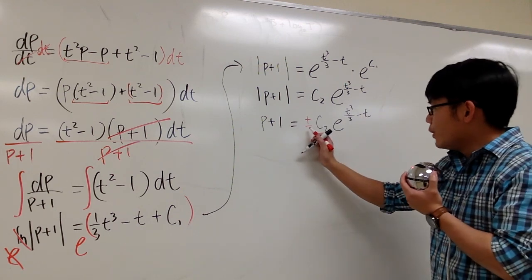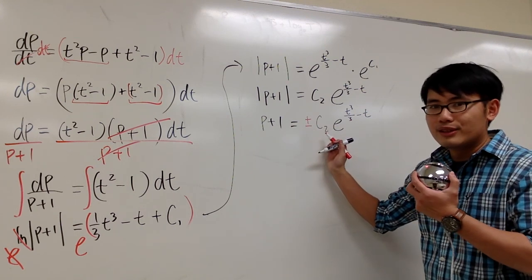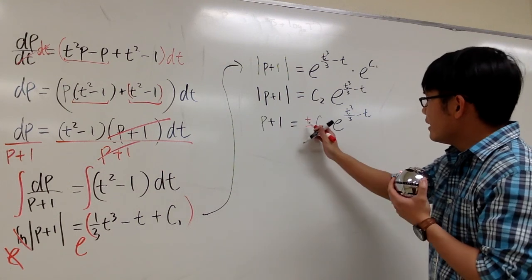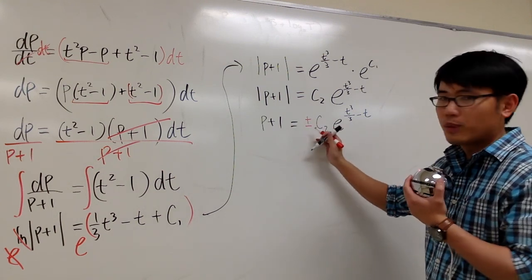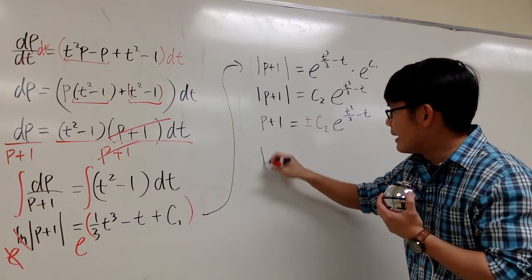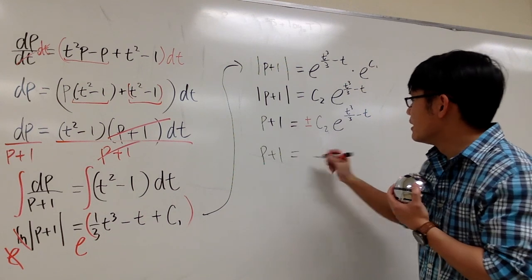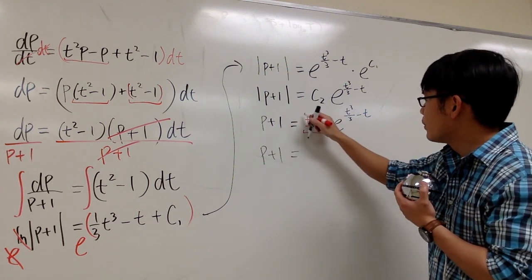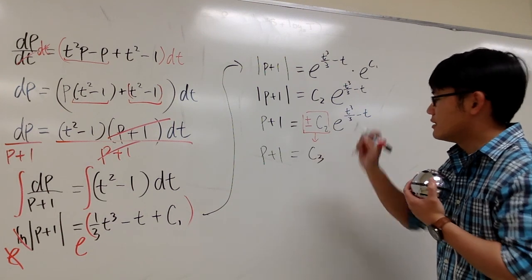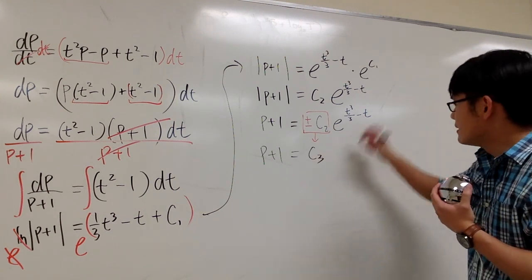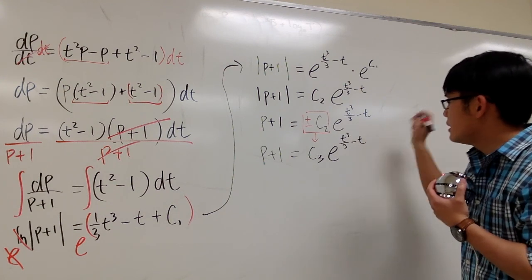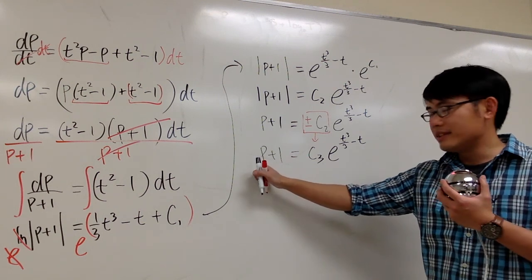Which one is it? The positive version or the negative version? In fact, we don't know unless we have like an initial condition. And then this is like positive 1 times c2 or negative 1 times c2. It's going to be a constant again. So, I might as well just call that another constant. So, this together, all this together, turns out to be another constant. And let me keep track. So, let me just say that's c3. And this is e to the t to the third power over 3 minus t. I'm almost done with isolating the p.